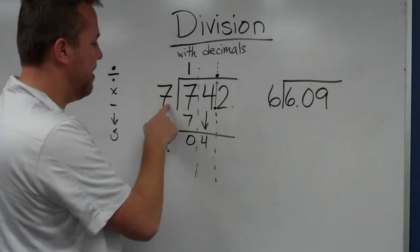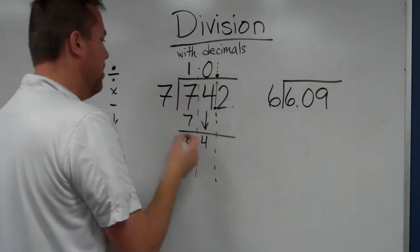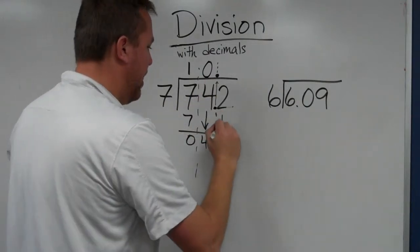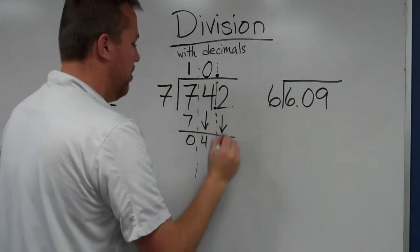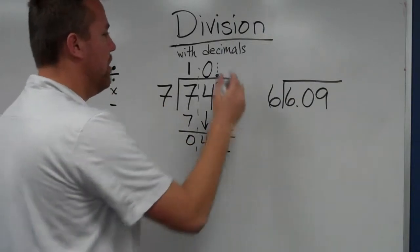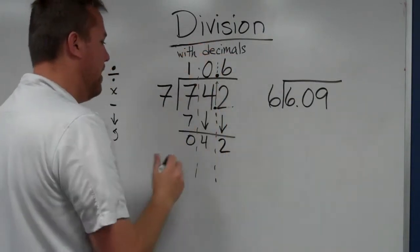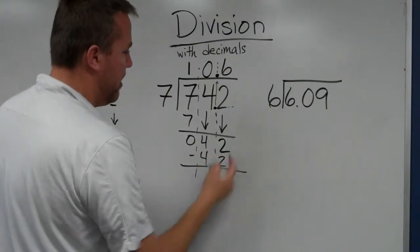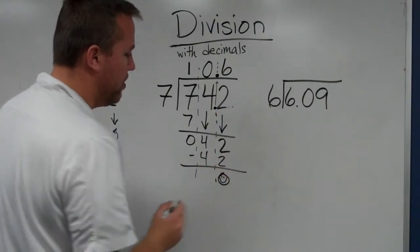Therefore, daddy divides 7 into 4 zero times. 7 times 0 is 0, of course. Now brother can bring down. Now 7 goes into 42, 6 times. 7 times 6 is 42. Sister subtracts, gets 0. Brother can't bring down. We are set.